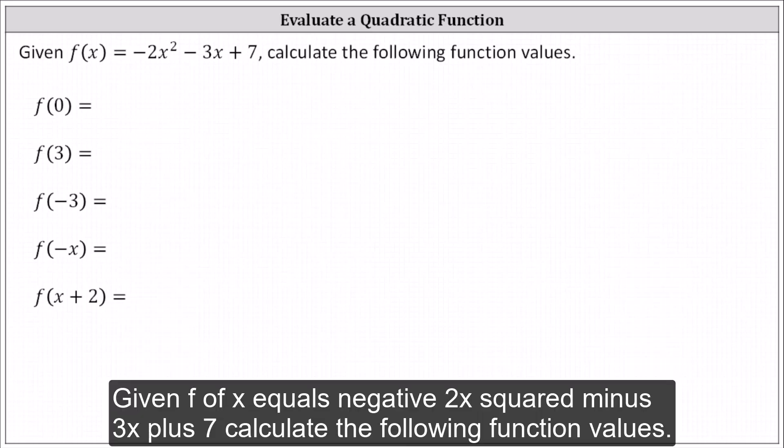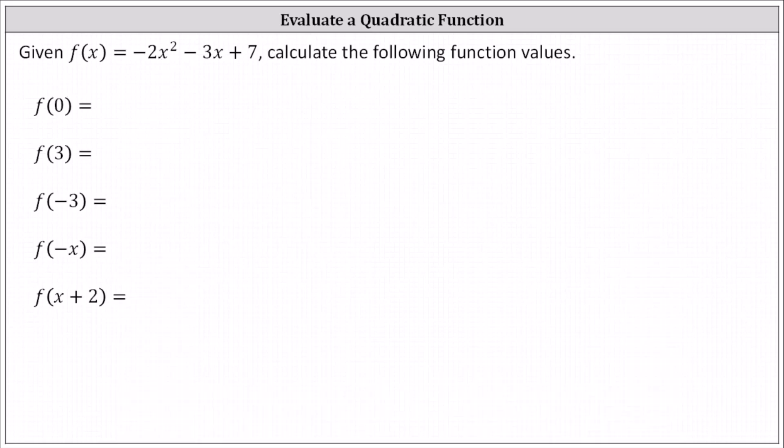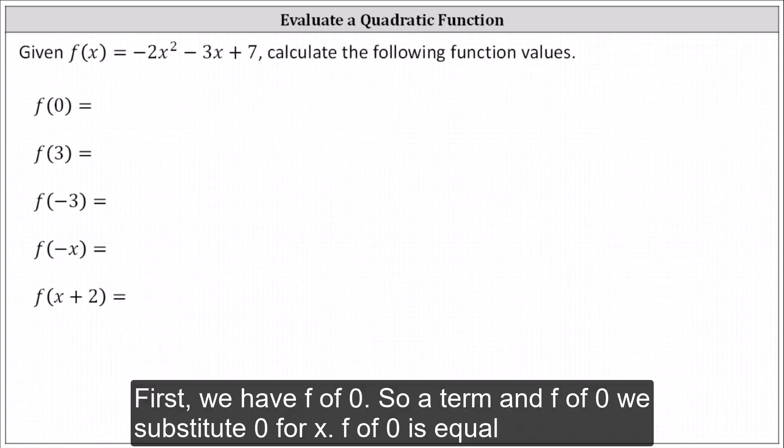Given f of x equals negative two x squared minus three x plus seven, calculate the following function values. First, we have f of zero. To determine f of zero, we substitute zero for x.